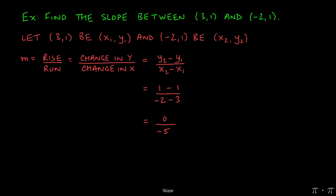0 divided by negative 5, hopefully you remember, is just 0. So that turns out to be our slope.